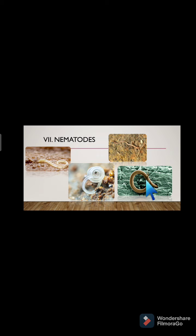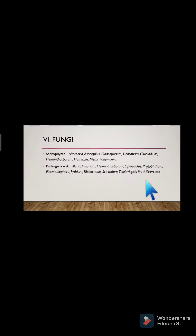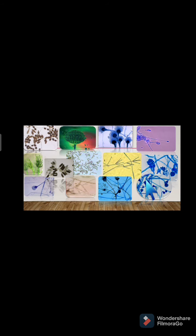Nematodes derive nutrients for their growth and reproduction from the cell contents and cytoplasm of other microorganisms such as protozoa, bacteria, and fungi which live together with them in the soil. They also provide important nutrients to the plant and protect the plant from pathogenic nematodes. Altogether, we see that there are seven groups of microorganisms which live in the soil.